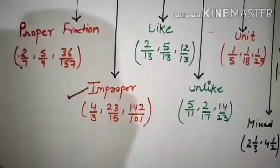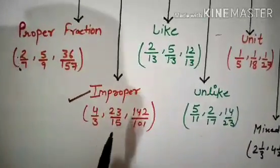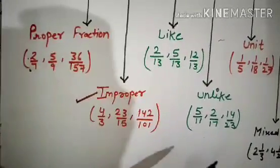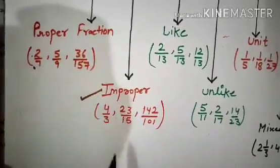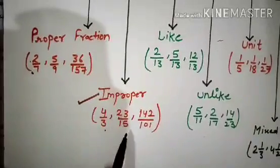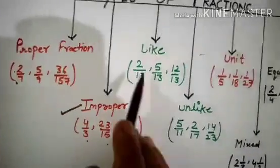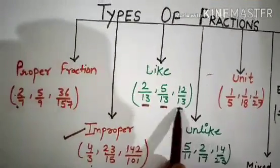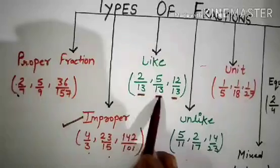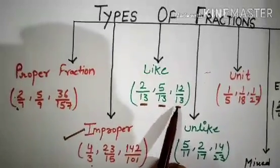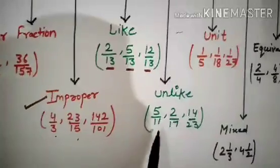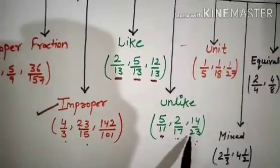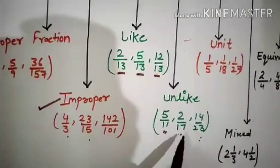The next type is an Improper Fraction. An Improper Fraction is one in which the numerator is greater than the denominator. The next type is a Like Fraction — fractions having the same denominator. For example, fractions with denominator 13 are Like Fractions. Unlike Fractions are fractions having different denominators, such as denominators 11, 17, and 23 — all different. These are Unlike Fractions.